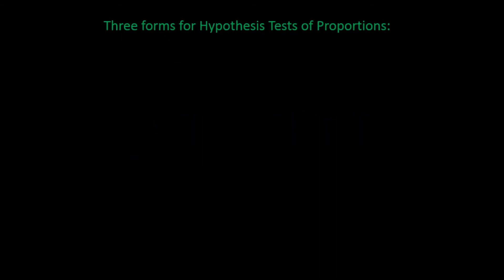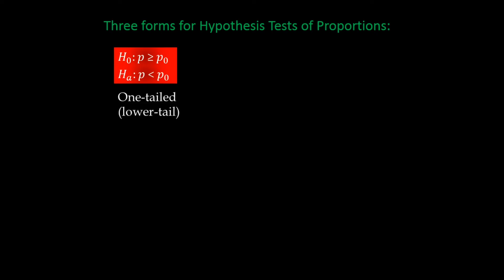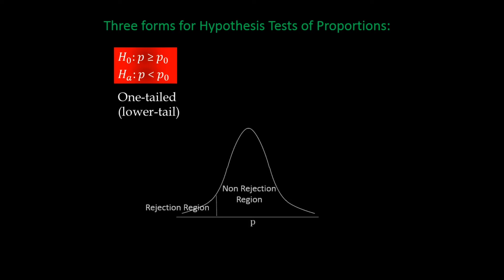Just as we had three forms of hypothesis testing for the mean, we also have three forms for hypothesis testing for population proportions. The first form has a less-than symbol in the alternative hypothesis, so this is a one-tailed or lower-tailed test. Because the hypothesis focuses on a direction, we are focused on the lower tail of the distribution, which would be our rejection region.